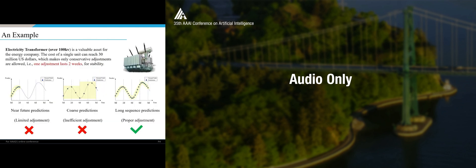I will give an exact example. The electricity transformer - not the transformer model, it's an electricity transformer - as the picture shows, is a valuable asset for the energy company. It is very expensive and can only accept one adjustment that lasts two weeks. If we make near future prediction as shown here, we can only perform a limited adjustment. If we make a coarse prediction and make predictions per day, it will become an inefficient adjustment because they have a range to adjustment. The only way is to make long sequence predictions. So then we have every day's plans and this becomes a proper adjustment.